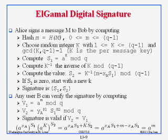You select K, which is not only random but also relatively prime to Q-1, and that is just for that message. The other side doesn't know K. To allow the other side to use that value, you send S1, which is A raised to K mod Q. Then you use K to compute K-inverse, and you send both of them.